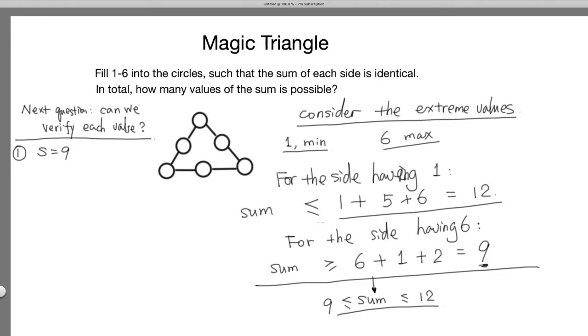Don't forget the constraint we are using. When sum is 9, the 6 has to be adding 1 and 2. So that means the 6 has to be inside of this triangle. The 6 has to be inside.